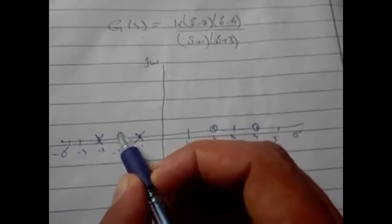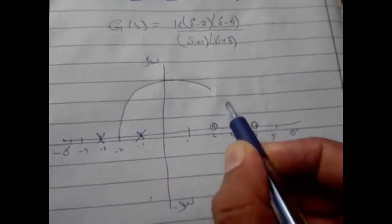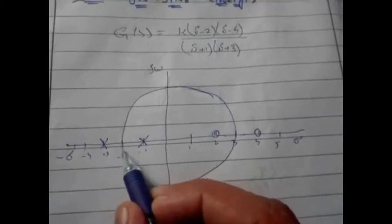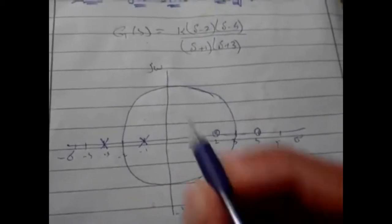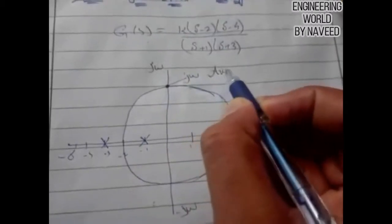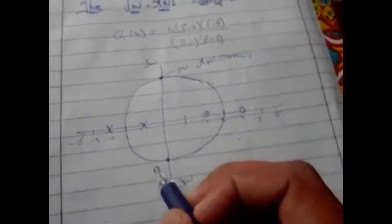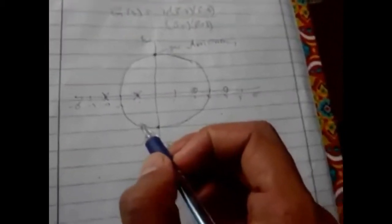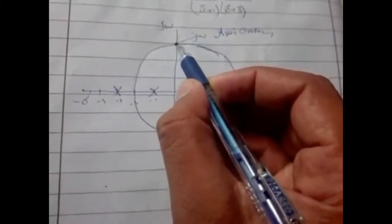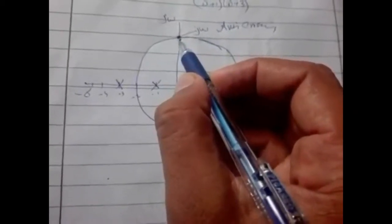Let's say this is the breakout point and this is the break-in point, so the root locus will look like this. Now this point is the jω axis crossing and this one is also the jω axis crossing. So we find the jω axis crossing at this region.